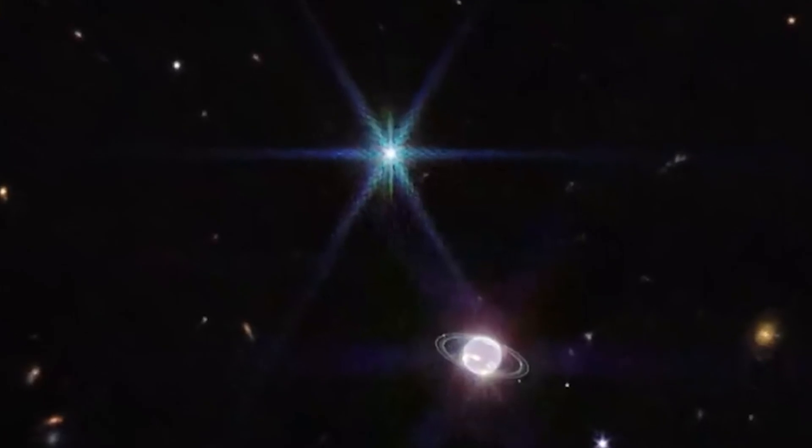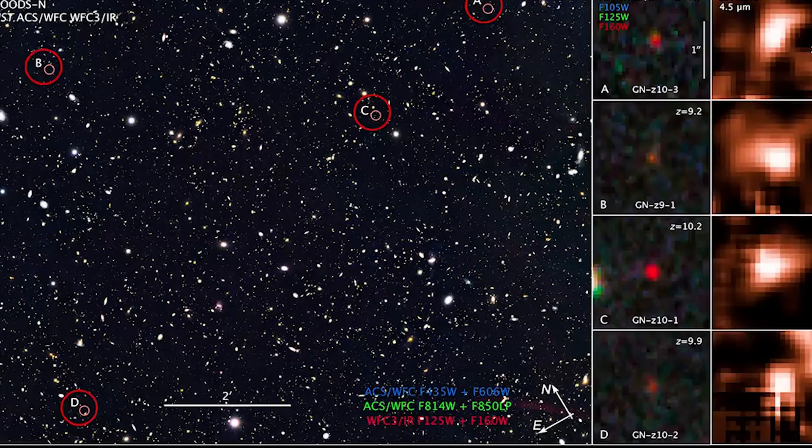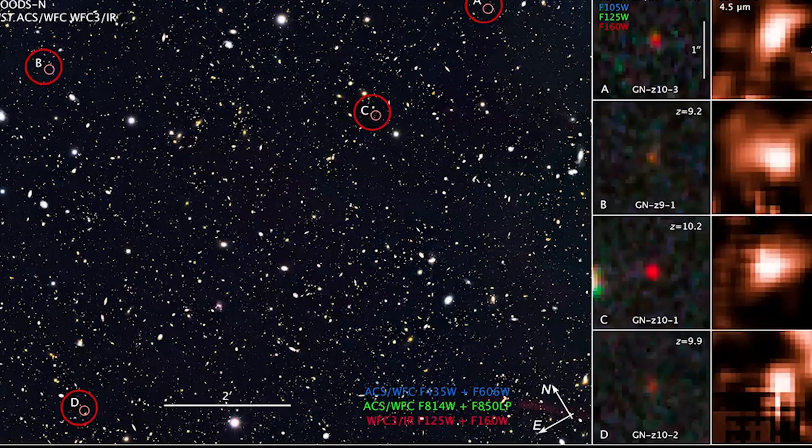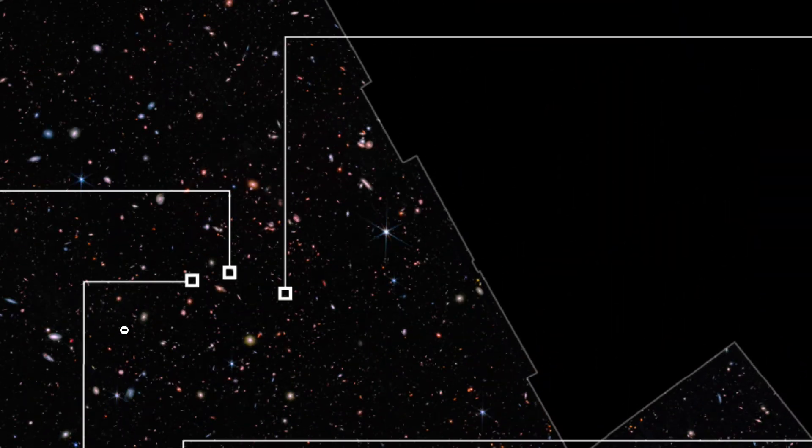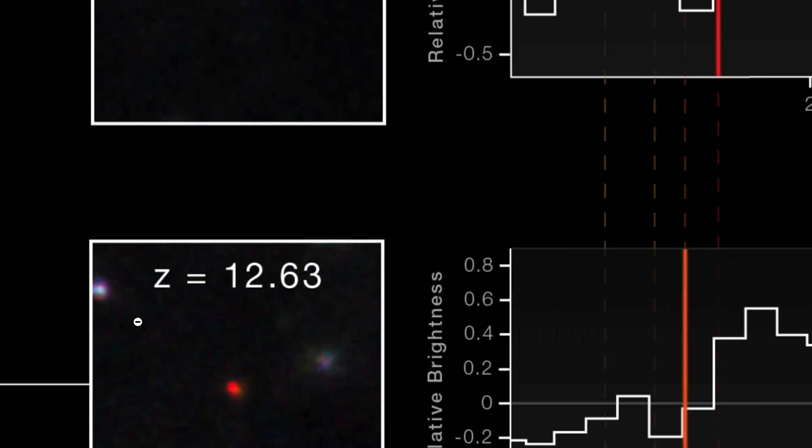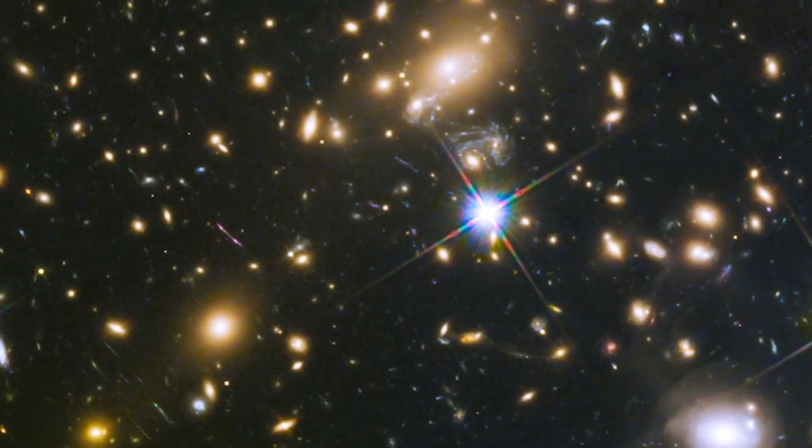Typically, spiral galaxies take billions of years to form. But Sears 2112 seems to have formed much faster, possibly in just 2 billion years. Its high redshift tells us that it existed at a time when the universe was a bit older, but still very young in cosmic terms.